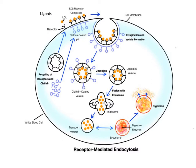This example shows a cell ingesting LDLs through receptor-mediated endocytosis. The first step is the binding of the ligand to a specific membrane protein receptor. The LDLs are carrying cholesterol through the blood plasma and bind to their specific receptors on the membrane, forming what are called LDL receptor complexes. The receptors are concentrated in regions of the cell membrane called clathrin-coated pits. As the LDLs bind to the receptors, the clathrin molecules start weaving together into a basket-like structure, causing the membrane to invaginate and the vesicle to begin developing, trapping the LDLs within it.